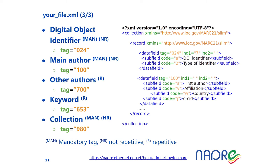The keyword tag 653 is not mandatory but is repeatable — you can specify it multiple times, one per keyword. There is also the collection tag 1980, which is mandatory and non-repetitive. To know more about the MARCXML standard, refer to the link highlighted in this slide, which is the same link shown during the previous hands-on.